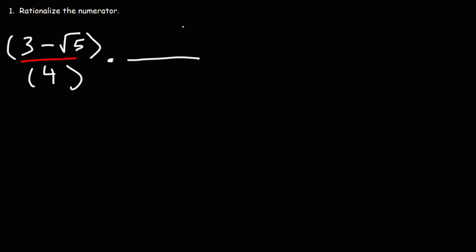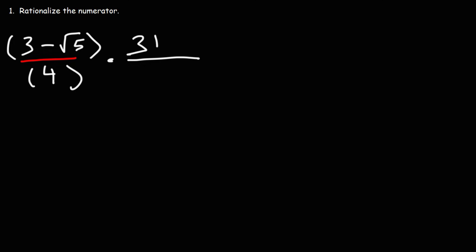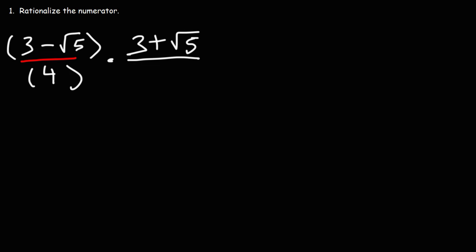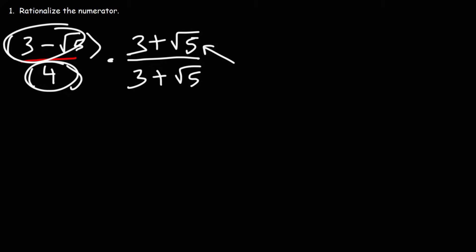The conjugate is everything that you see here but with the opposite sign. So instead of 3 minus the square root of 5 it's going to be 3 plus the square root of 5. That's the conjugate of the numerator. Now whatever you do to the top you must also do to the bottom, so we're going to multiply both the top and the bottom of this fraction by the conjugate.